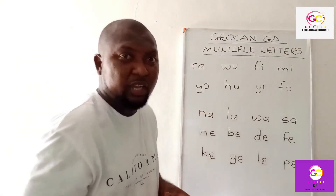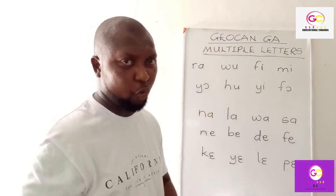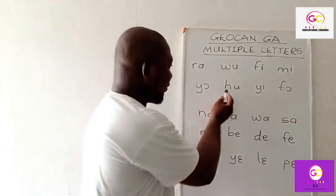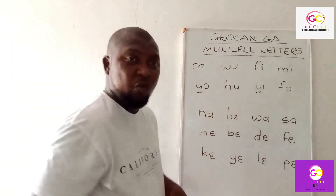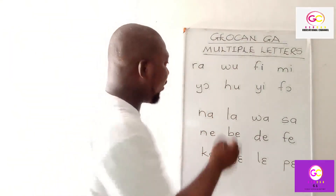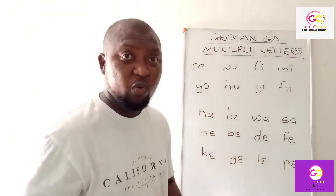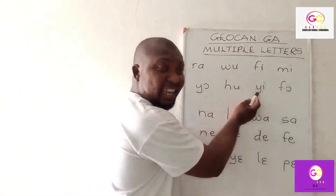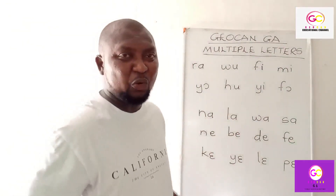We have 'y' and 'o'. When you join these two sounds you get 'yo'. Repeat after me: yo. Again: yo. Good. We have 'h' and 'u'. When you join them you have 'h' and 'u'.